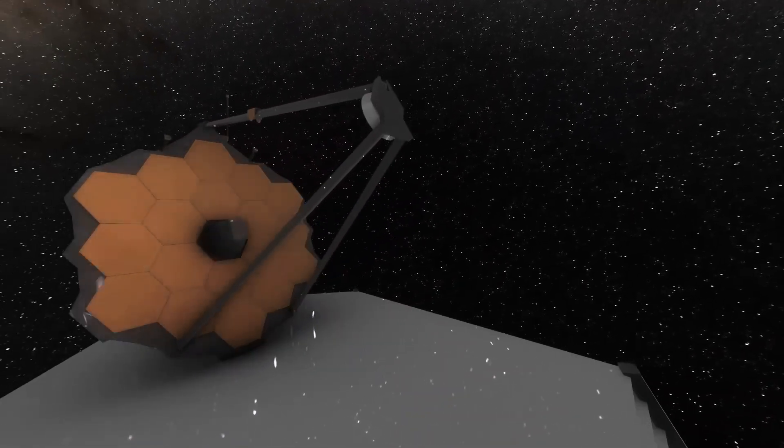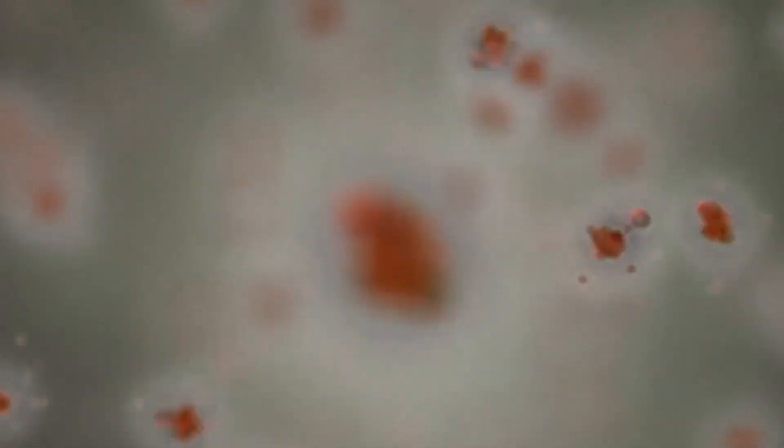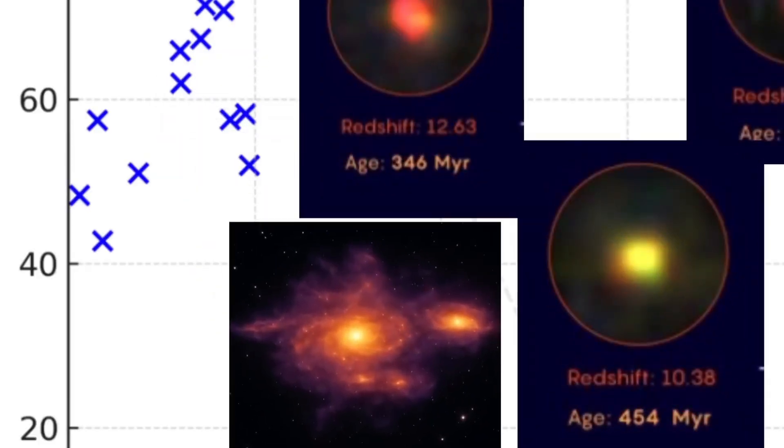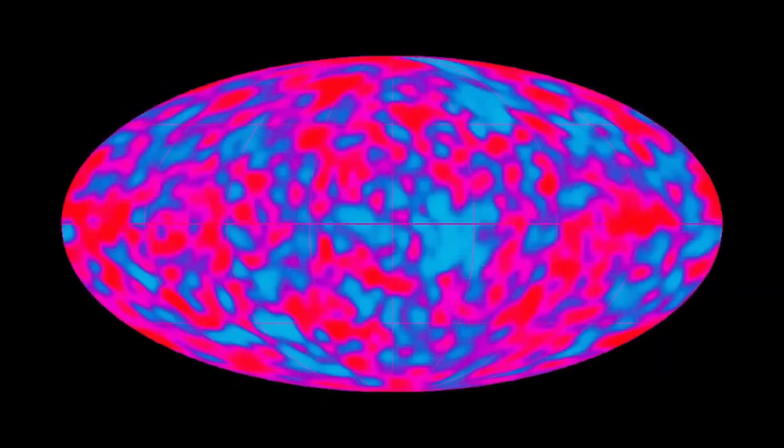So, something extraordinary must have happened. A tiny imbalance, a subtle tip of the scales, created just a whisper more matter than antimatter. Even a surplus as minuscule as one extra particle for every billion could have been enough to shape the entire cosmos, including you and me. But why did this slight favoring happen? Was it a cosmic accident? A hidden law of nature? Or perhaps something grander, a design beyond our understanding?